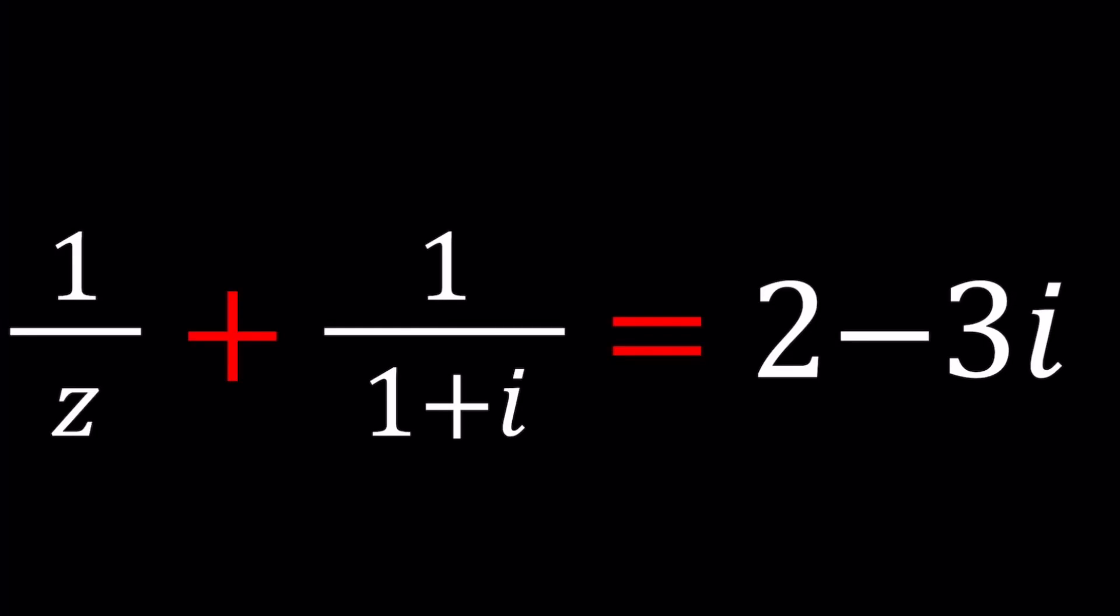Hello everyone. Welcome to A plus BI. This channel is all about complex numbers and in this video we're going to be solving a rational equation. We have 1 over Z plus 1 over 1 plus I equals 2 minus 3I and we're going to be solving for Z.